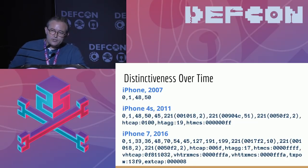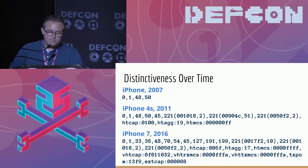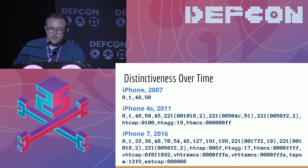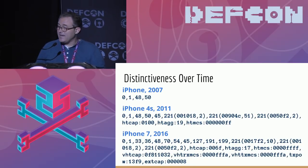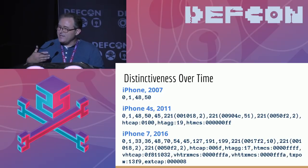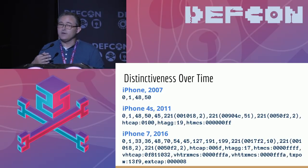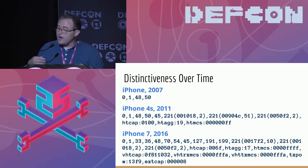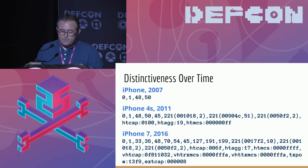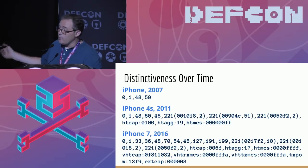The signature has become more complex over time. This shows the association request portion of the signature for three devices. The first is from an original iPhone, which is a .11g device — this taxonomy mechanism wouldn't have worked very well in that time frame, as there was very little differentiation between devices. The iPhone 4S is a .11n device introduced about four years later and added a number of options to its management frames. The iPhone 7, from about five years after that, is a .11ac device and added even more.